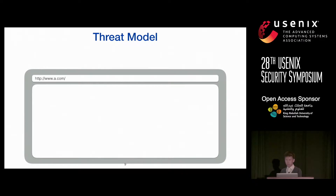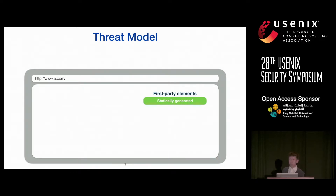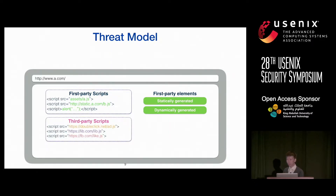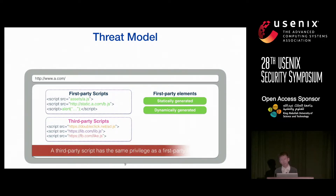In our threat model, we consider the website the user directly visits as the first-party website — for example, a.com. The website includes elements generated directly by the first party, which can be parsed statically from the raw HTML or inserted dynamically via JavaScript. It's also very common for applications to include content from third parties. Third-party scripts loaded in the same frame have the same privileges as first-party scripts.